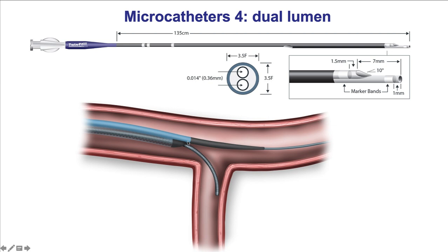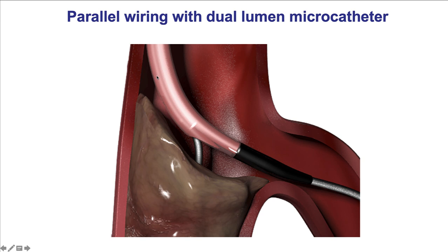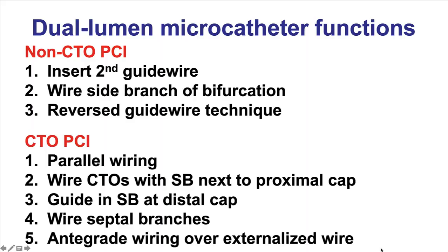Category four — the dual-lumen microcatheters. A classic example of their use is for wiring side branches. The two available in the United States are the Twin Pass Torque, the standard Twin Pass, and also the Sasuke. One potential use in CTO-PCI is parallel wiring — a wire in a side branch stabilizes the microcatheter and allows crossing attempts through the over-the-wire lumen. All dual-lumen microcatheters except the Recross have a monorail lumen and an over-the-wire lumen; the Recross is special in that it has two over-the-wire lumens all the way back.